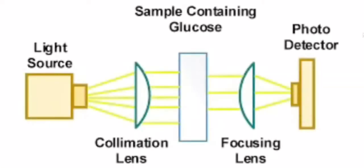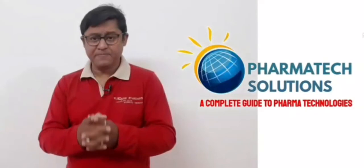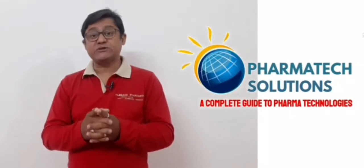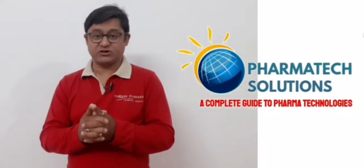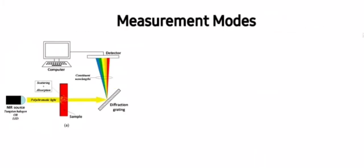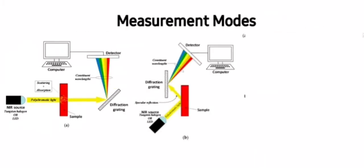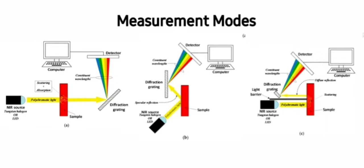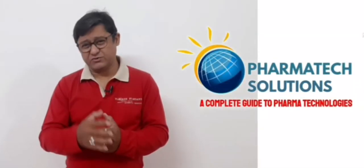Here, the light interacts with the sample and the detector measures the transmittance and the absorbance. Now this technology uses three basic measurement modes: transmittance, reflectance which includes diffuse reflectance, and interactance. However, all three work on the same core technology, that is dispersive spectrometry.